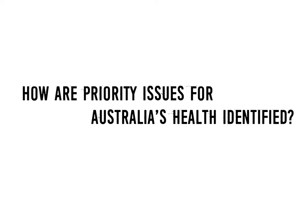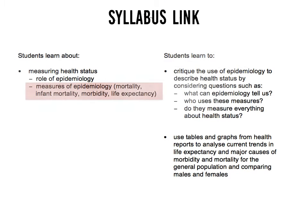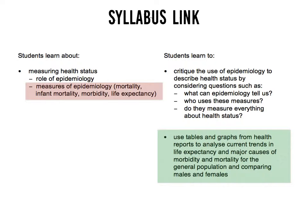This presentation will address the focus question: how are priority issues for Australia's health identified? We'll be focusing on measuring health status and looking at measures of epidemiology, specifically infant mortality. We'll use some tables and graphs to help identify current trends in relation to infant mortality.